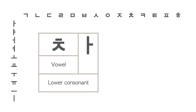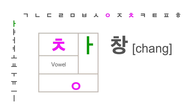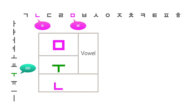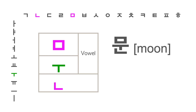When the consonant 이응 is added to the letter 차, it is pronounced 창. This square-looking consonant is 미음, which makes the M sound. Adding the vowel 우 to 미음, and also adding a lower consonant 니은 — which makes the N sound — putting everything together makes the letter 문.